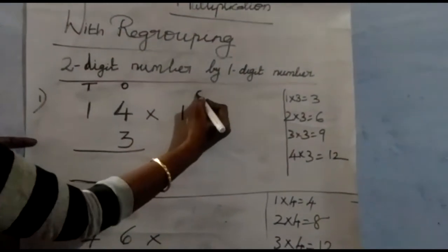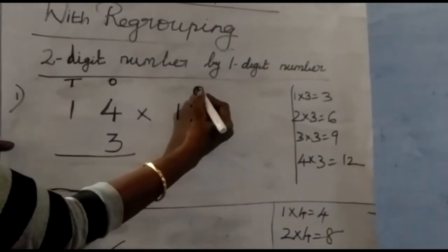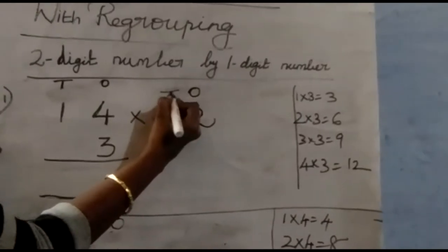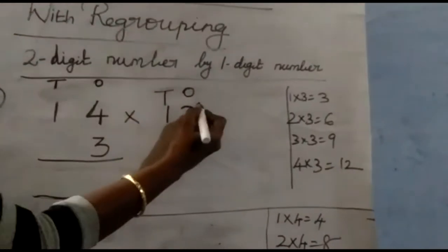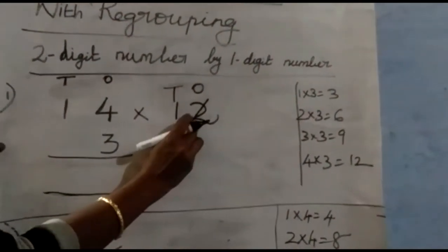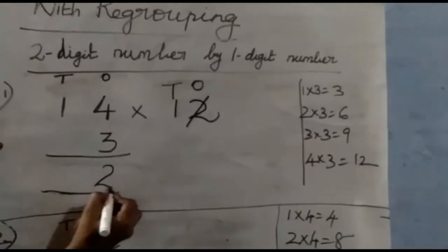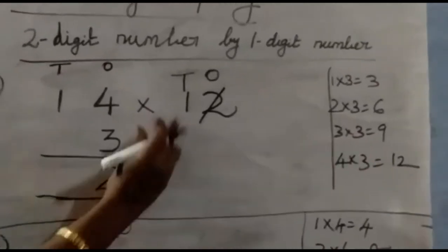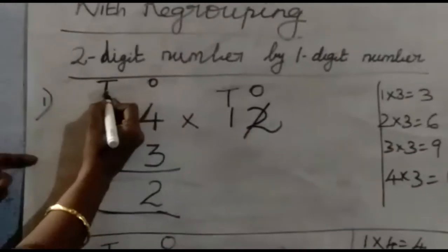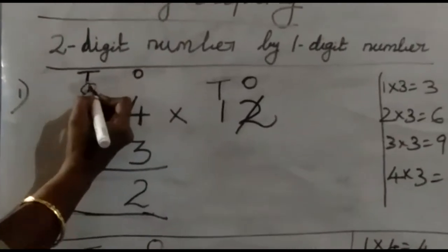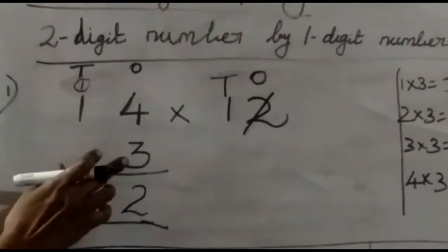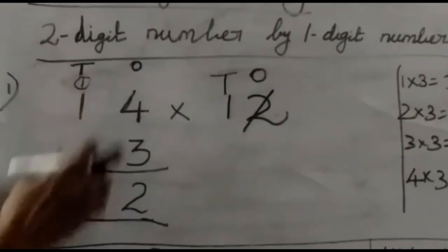We multiplied the ones place. Ones place gives us twelve — strike out the two and put two in the ones place and one in the tens place. We have finished multiplying the ones place.